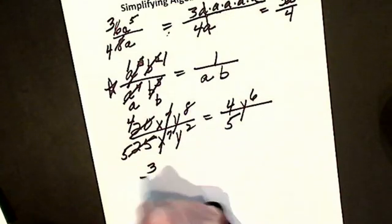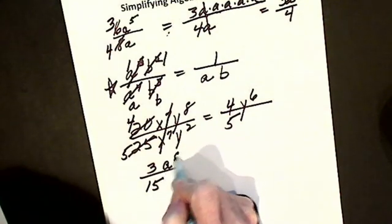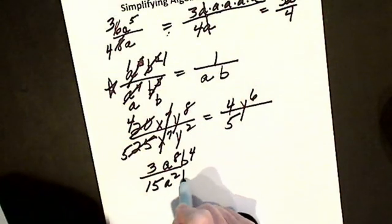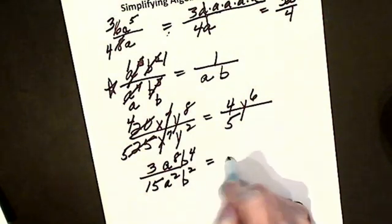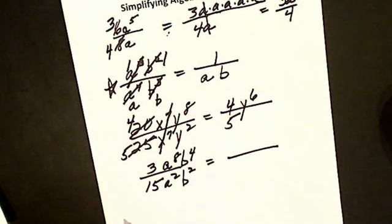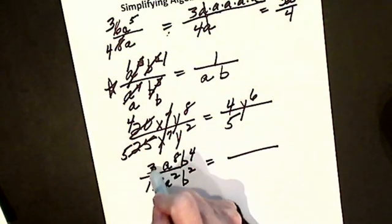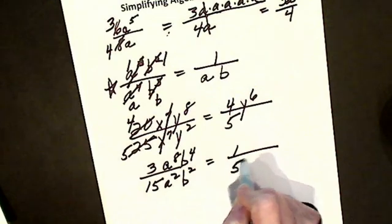We'll do another one. Let's say I have 3 divided by 15, a to the 8th, b to the 4th. So now, simplify my 3 fifteenths, 3 into 3 is 1, 3 into 15 is 5.